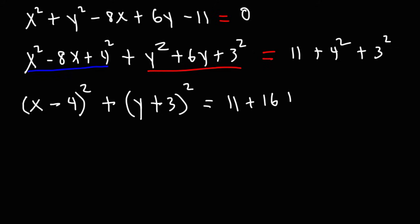4² is 16. 3² is 9. So the last thing we need to do is combine the numbers on the right side. 11 plus 9 is 20. And 20 plus 16 is 36. So now we have the equation in standard form.